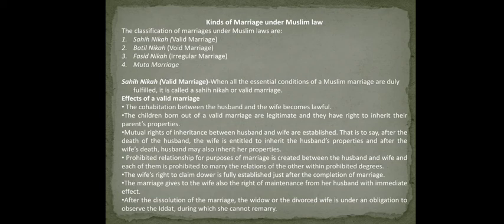A valid marriage, known as Sahih, is one in which all five essential conditions — proposal and acceptance, consent, dower, competency of parties, and sufficient witnesses — are duly fulfilled. When all conditions are met, it is called a valid or Sahih marriage.